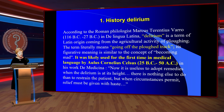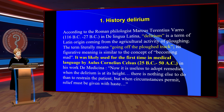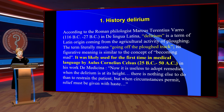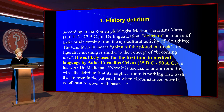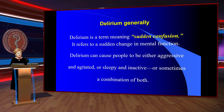Regarding the history of delirium: according to the Roman philosopher Marcus Terentius Varro in Lingua Latina, delirium is a term of Latin origin coming from the agricultural activity of plowing. The term literally means 'going off the plank track.' Its figurative meaning is similar to the concept of becoming mad. It was likely used for the first time in medical language by Aulus Cornelius Celsus in his work.